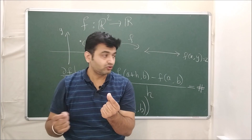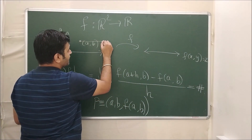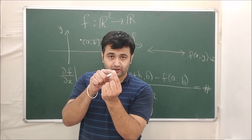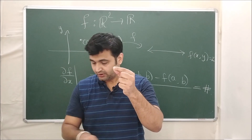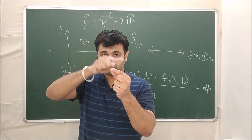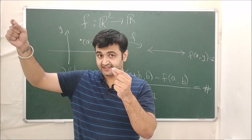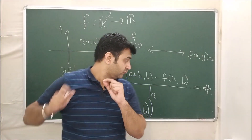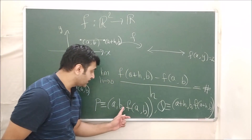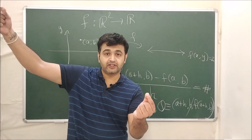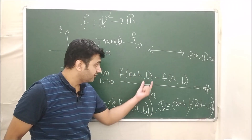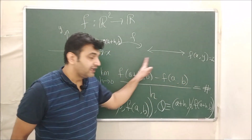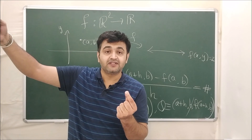Now consider another point Q. There is an increment in the x component, so if P is at (a, b), the point Q is at (a+h, b) in the domain, and on the surface Q = (a+h, b, f(a+h, b)). You draw the line joining P and Q. The slope of this line is (f(a+h, b) − f(a, b)) / h — the slope of the secant line. Both P and Q lie on the plane y = b as well as on the surface z = f(x,y).